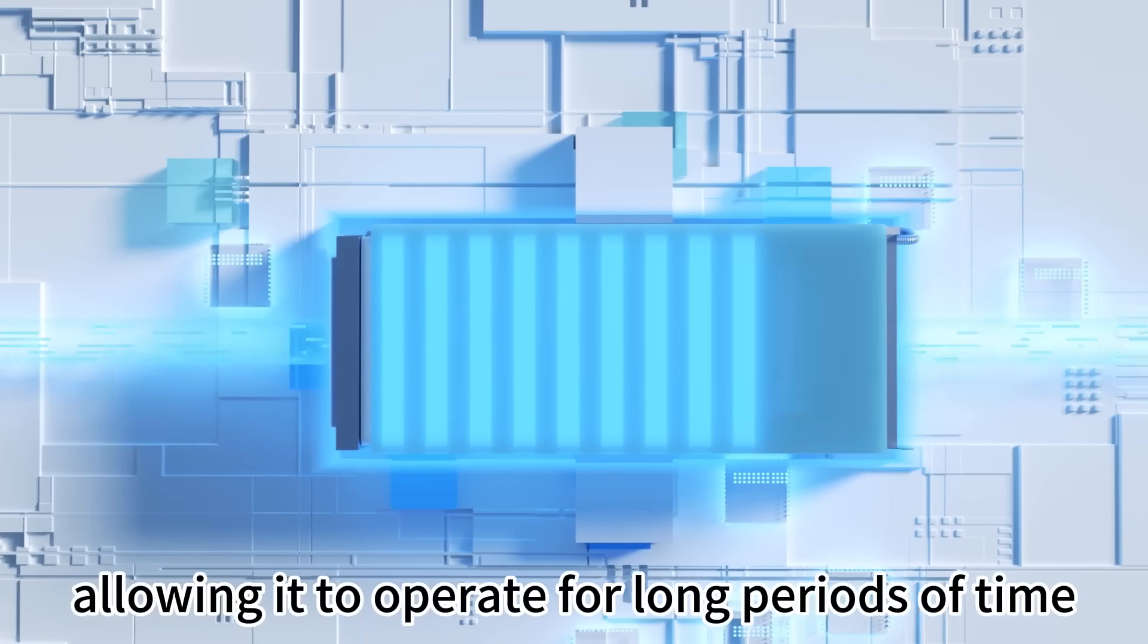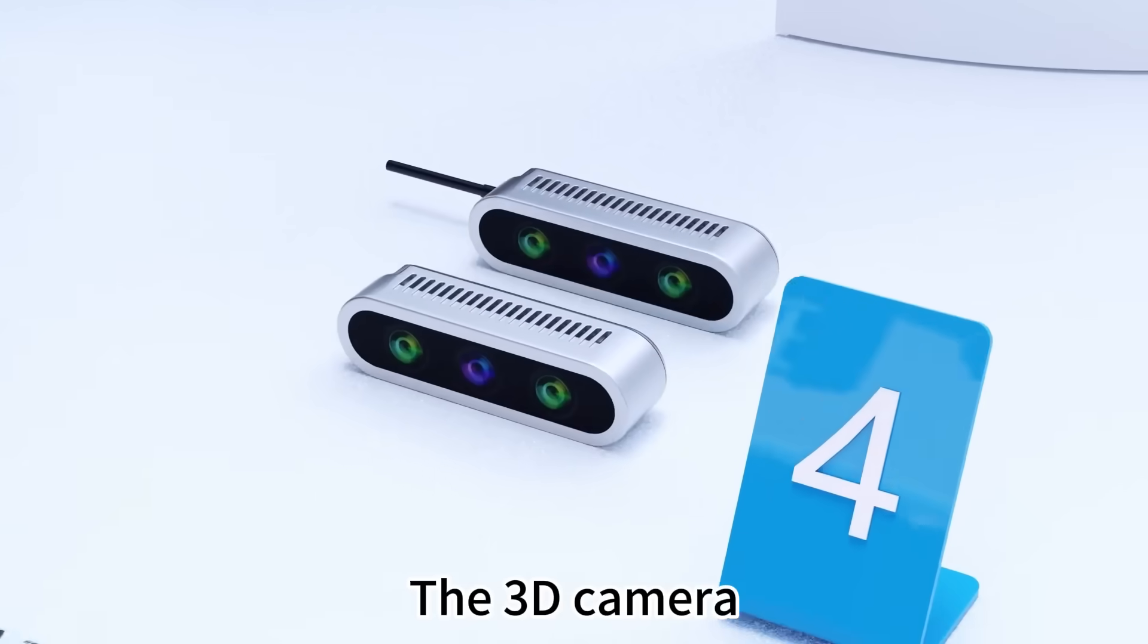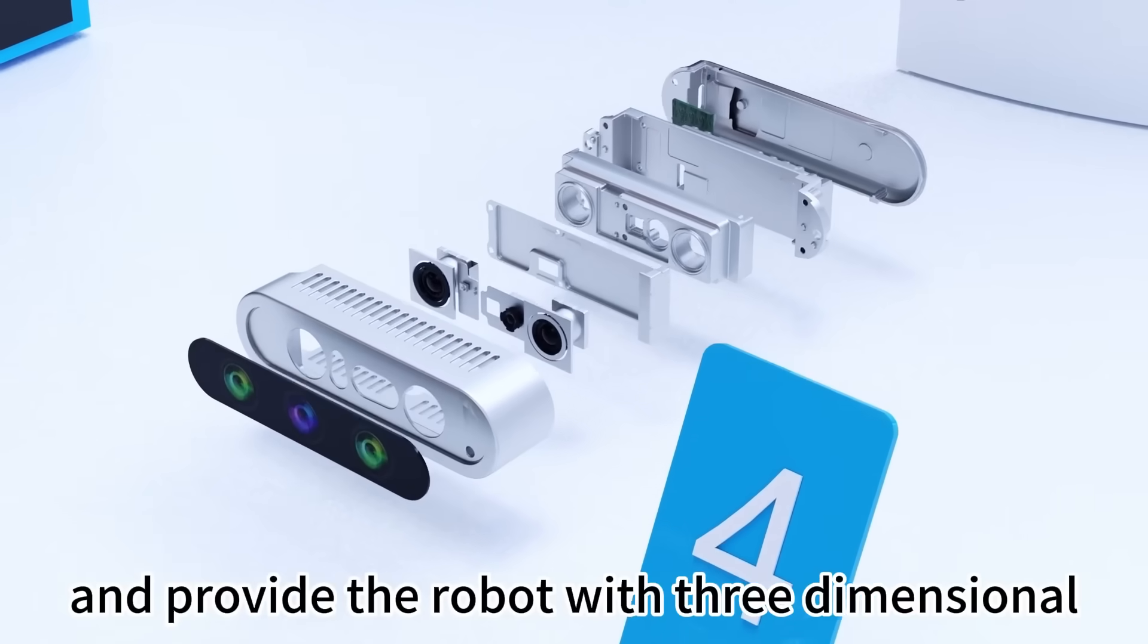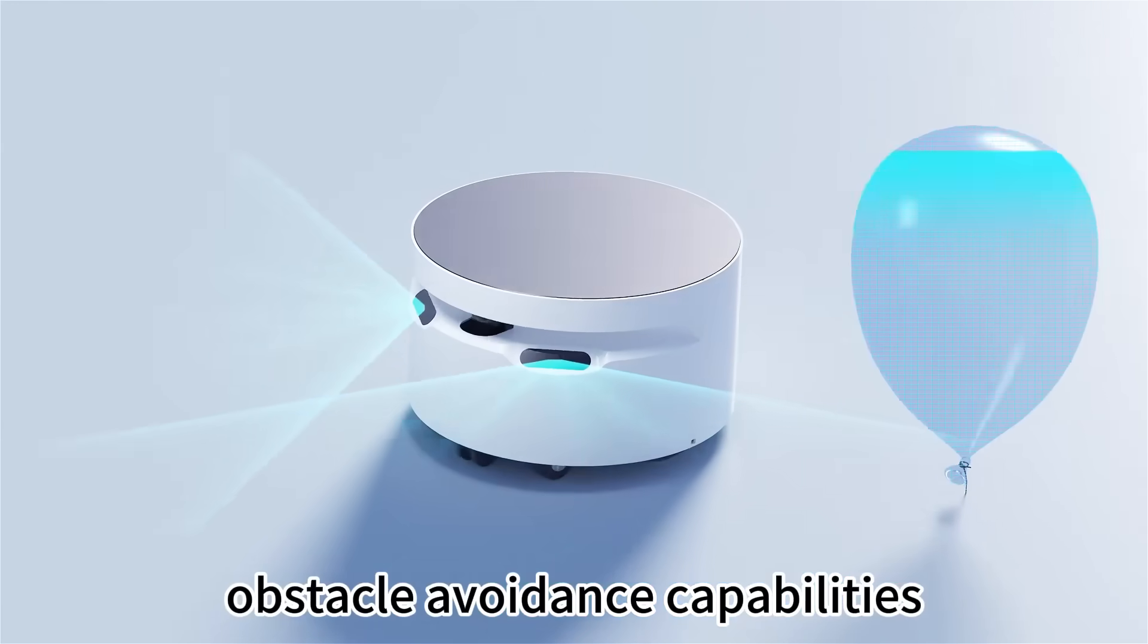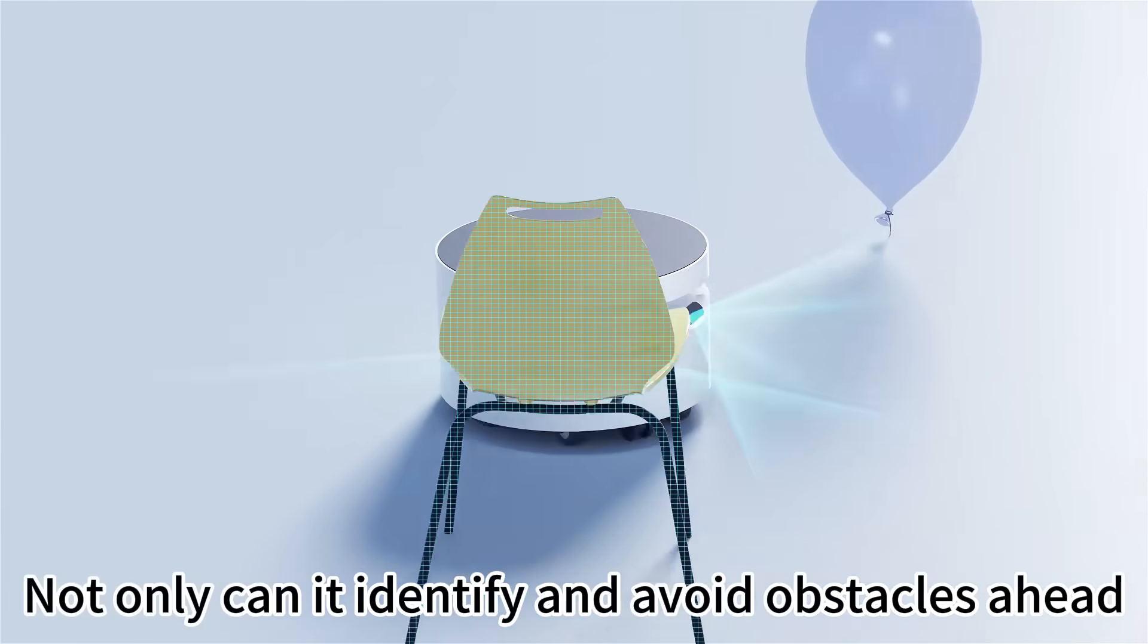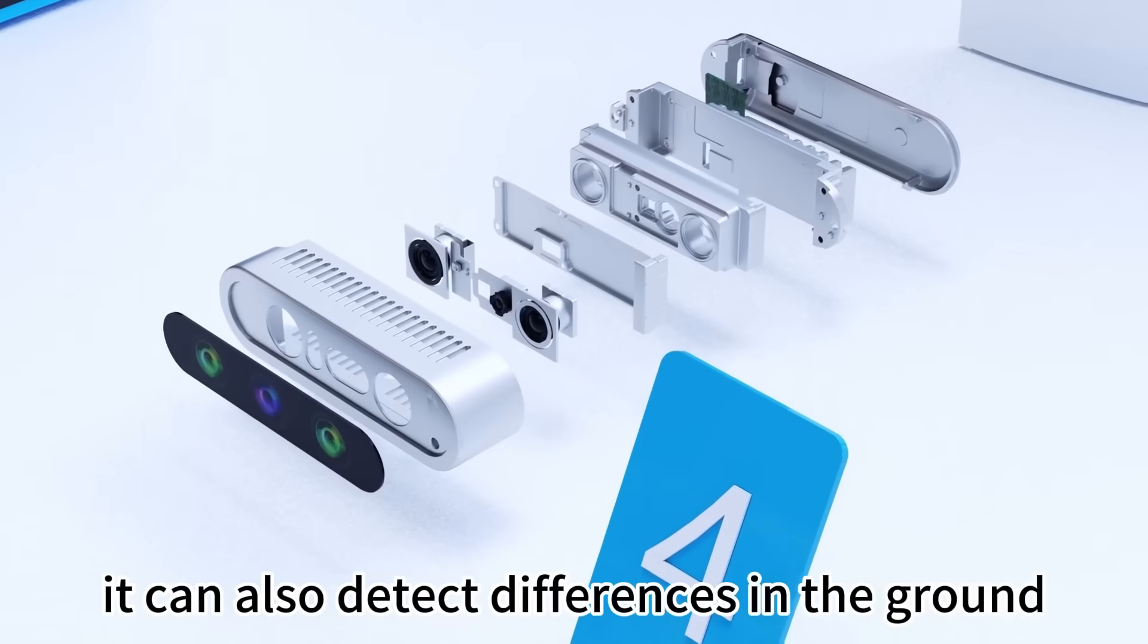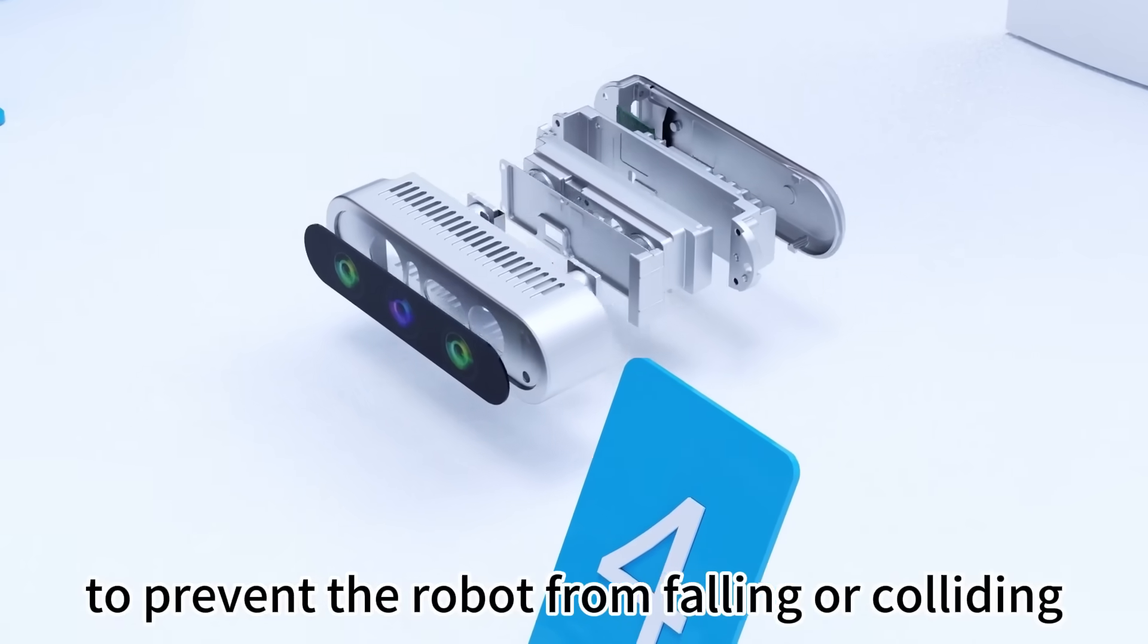This allows it to operate for long periods of time. The 3D camera can capture depth information and provide the robot with three-dimensional obstacle avoidance capabilities. Not only can it identify and avoid obstacles ahead, it can also detect differences in the ground to prevent the robot from falling or colliding.